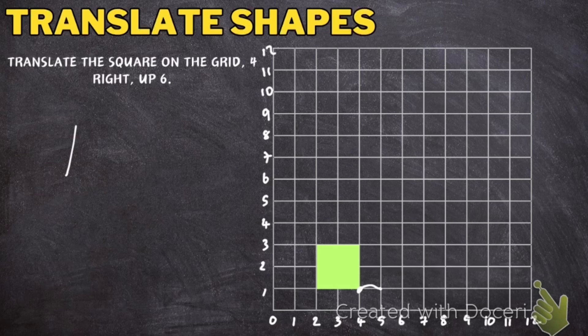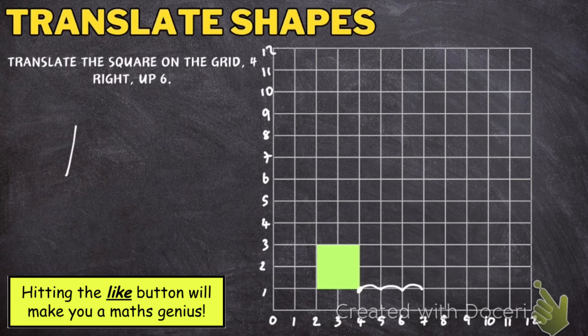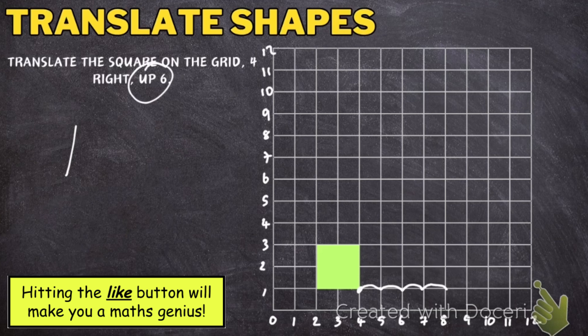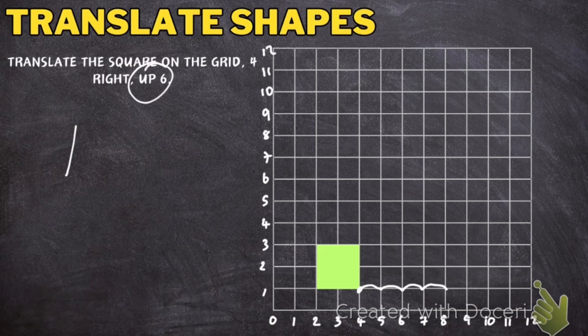So 1, 2, 3, 4. Then what I'm going to do is I'm going to go up 6 because it tells me to go up 6.